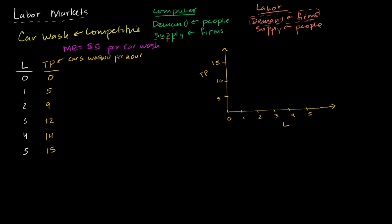We can plot these points: zero people, zero cars; one person, five cars per hour; two people, nine cars per hour; three people, 12 cars; four people, 14 cars; and five people, 15 cars per hour. Connecting the dots gives a total product curve that looks like this — it's increasing but with a diminishing slope as we add more workers.